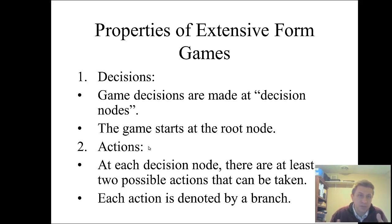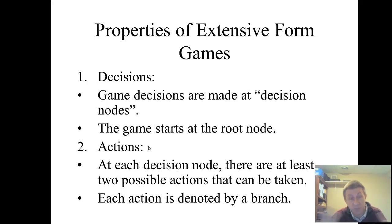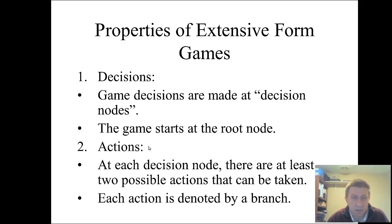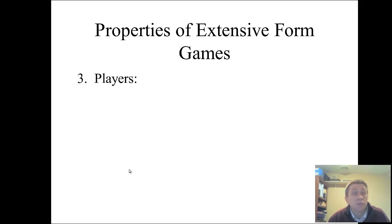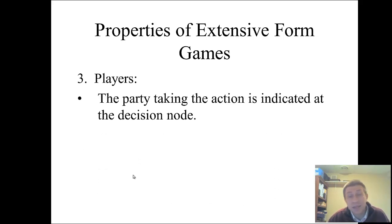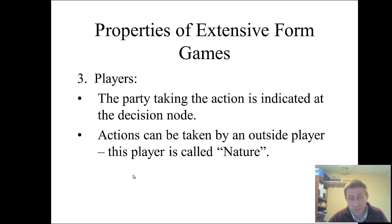In a payoff matrix you write the player in the row or column, either above or to the left of the decisions. In a tree diagram, you write the actions that could be taken right on the branch. Players are indicated at the decision node — so who is making the particular decision is written at the decision node.